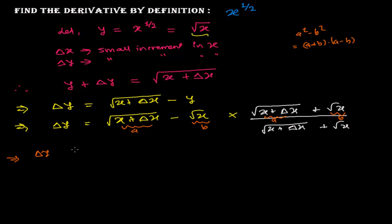So delta y equals root of x plus delta x whole squared minus root x whole squared, divided by root of x plus delta x plus root x. This simplifies to x plus delta x minus x, divided by root of x plus delta x plus root x.